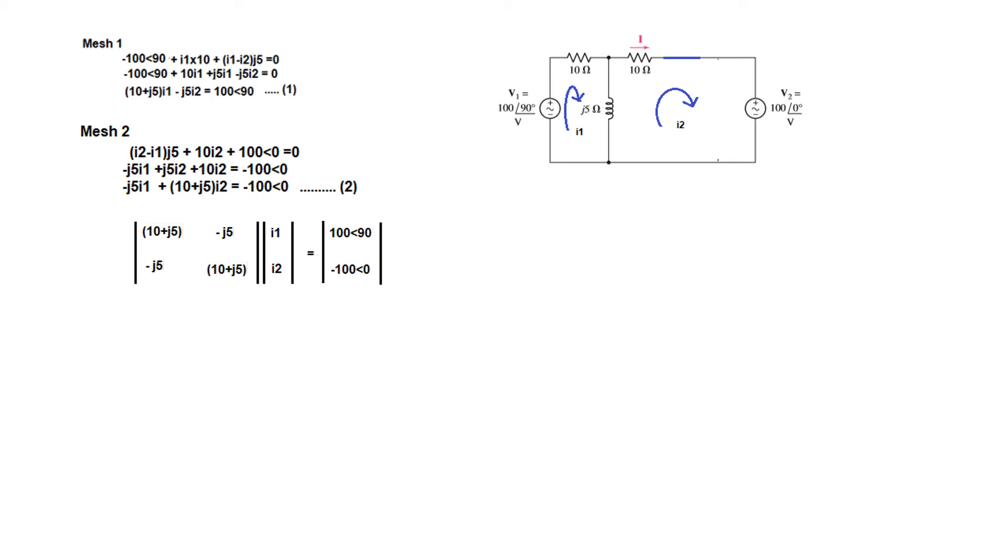But anyway, now this is our delta, so we will solve it. So delta—we solve, multiply this minus multiplication of this, so this minus these two terms. And by solving, delta comes to be 141.42∠45°.